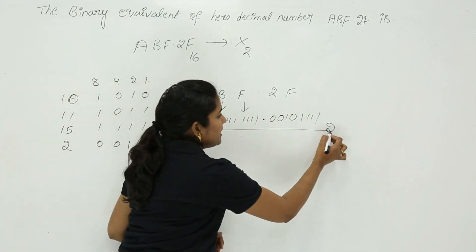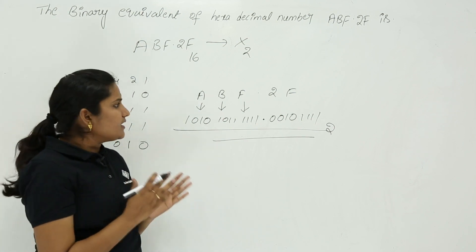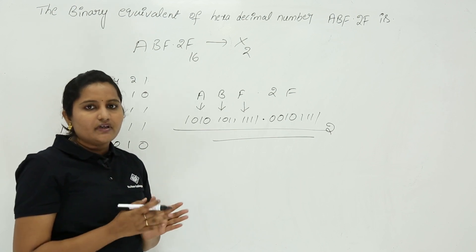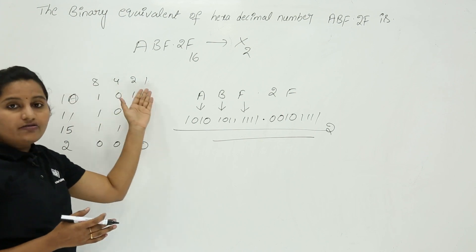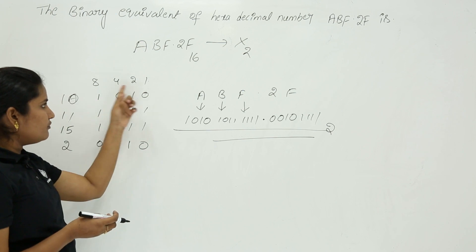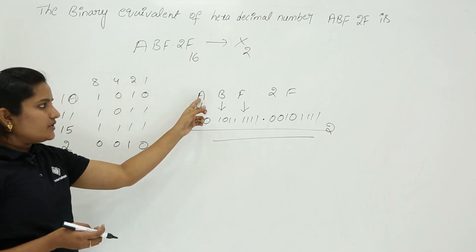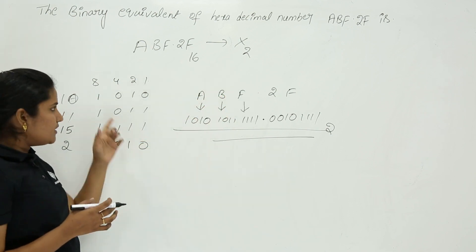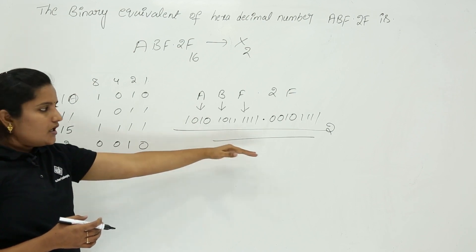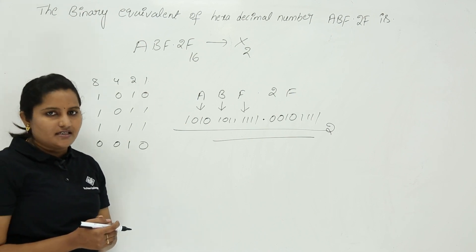This is the equivalent binary for the given hexadecimal number. In the same way, we can convert any hexadecimal number directly into binary by decoding each digit into 4 bits using the 8421 code reference. Keep in mind the values of A, B, C, and F, decode with 8421, and you can directly write the equivalent binary value for any given hexadecimal number.